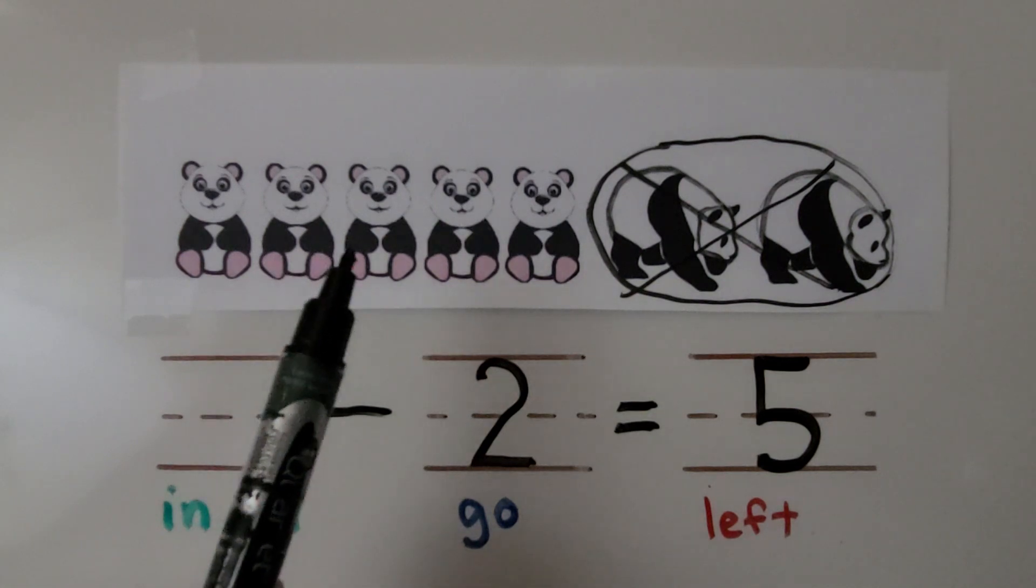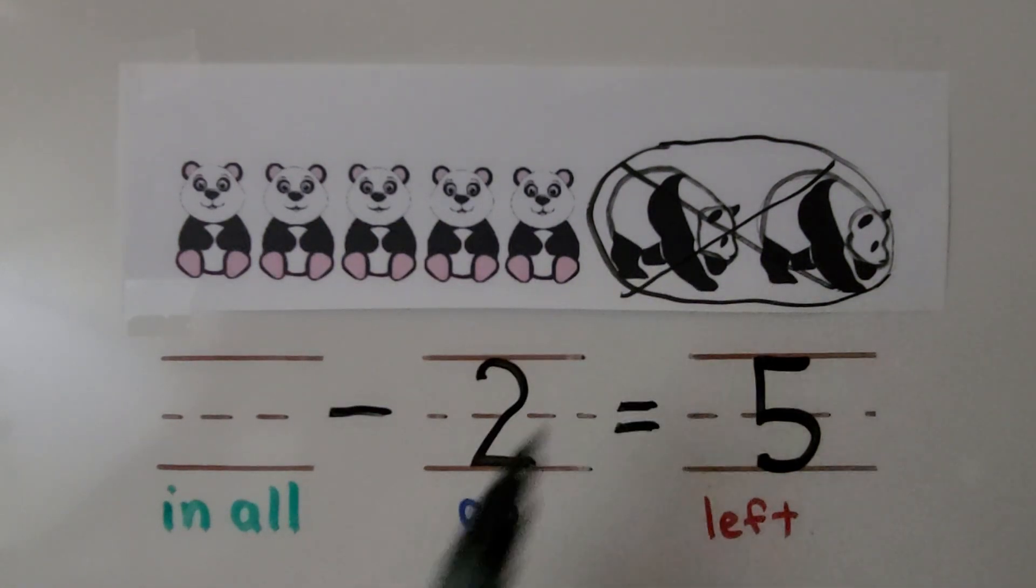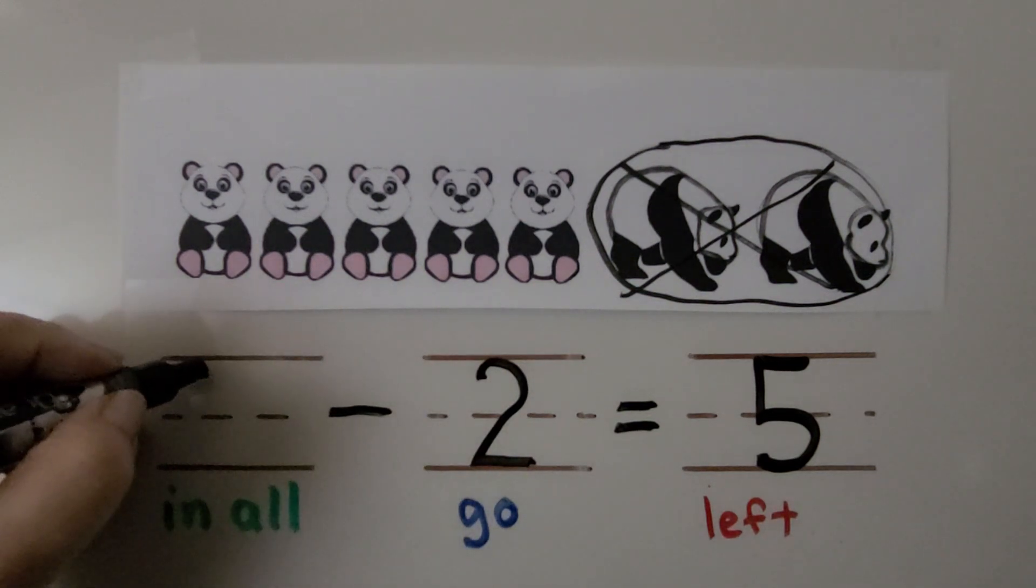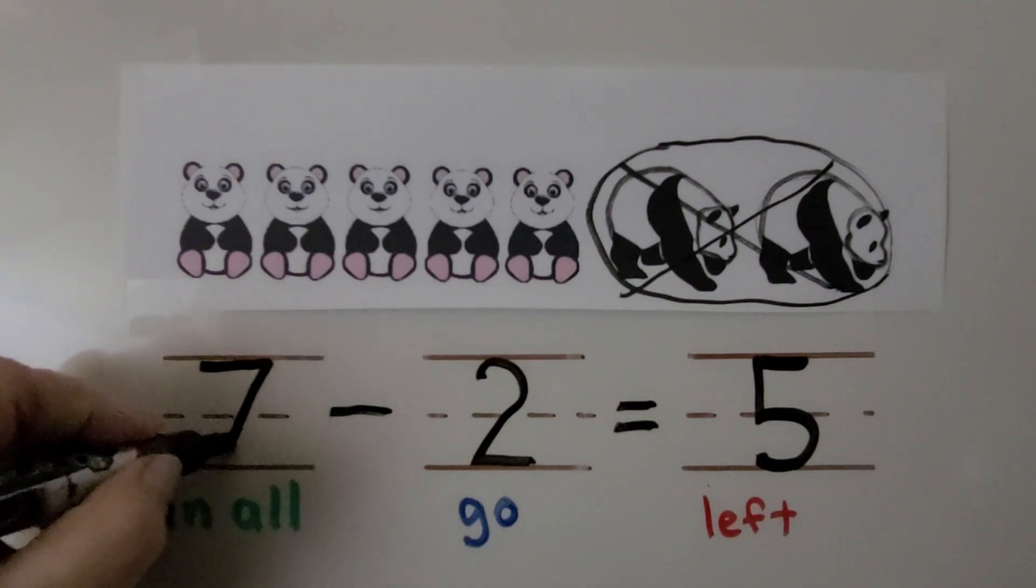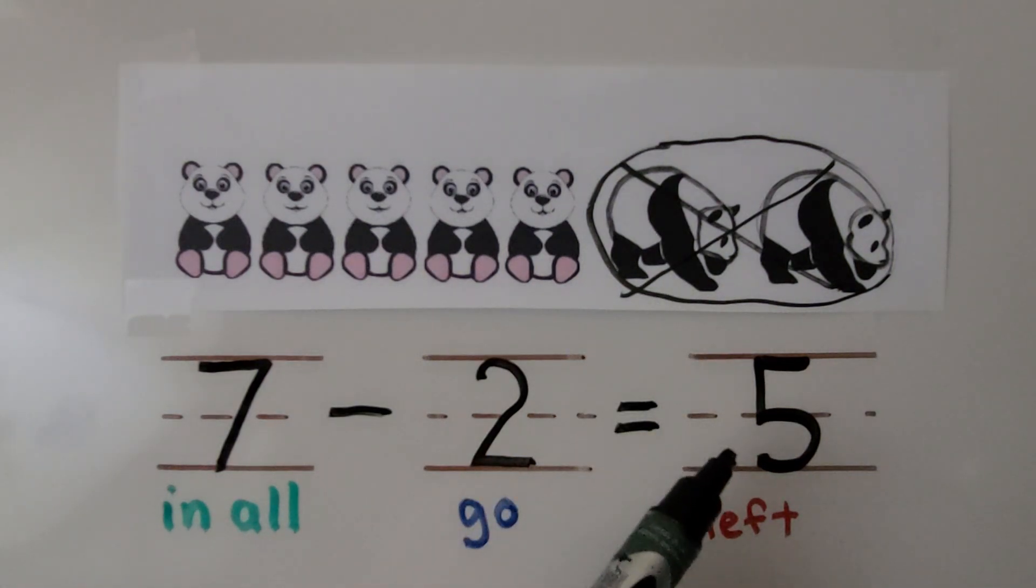One, two, three, four, five, six, seven. We can write seven. There were seven pandas in all. Two walk away. There are five left. The number of pandas that we cross out is the number being taken from the set of pandas.